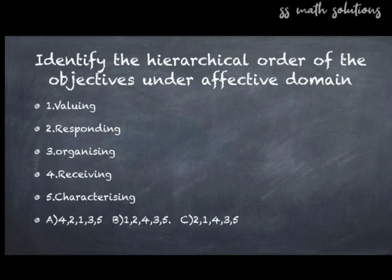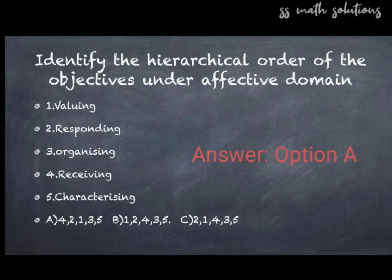Question 7: Identify the hierarchical order of the objectives under the affective domain. The five steps are: valuing, responding, organizing, receiving, characterizing. The correct hierarchical order is option A — four, two, one, three, five — meaning: receiving, responding, valuing, organizing, and characterizing.